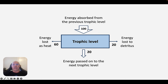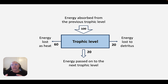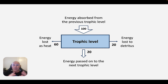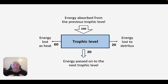So where does energy go? Let's say we have 100 units of energy passed from one trophic level to the next when one organism eats another. Of those 100 units, 20 units are lost in detritus — basically undigested food passed as feces. 60 units of energy are used in cellular respiration, the byproduct of which is heat. Only 20 units go into the actual tissue of the organism, stored so that when that organism gets eaten, those 20 units are passed on to the next trophic level. In this particular example, that's 20% efficiency.